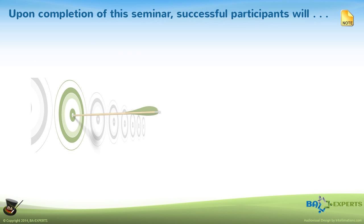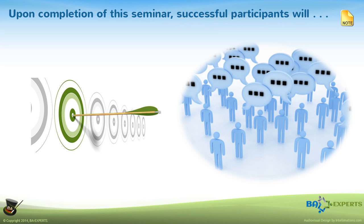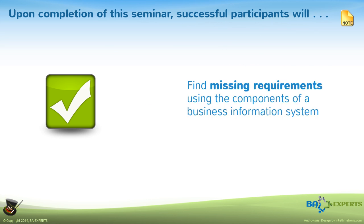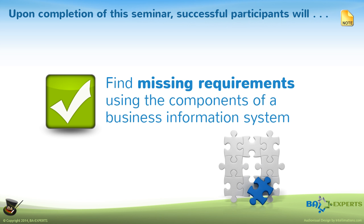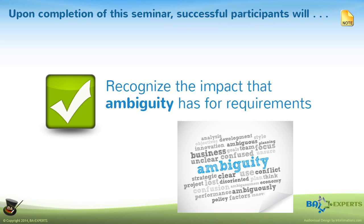The primary learning objective of the workshop is to enable business people to communicate with the information technology department more effectively. Missing or misunderstood requirements are the chronic problem facing IT projects today, and have been since the invention of this versatile and volatile technology. Therefore, we're going to introduce you to the idea of requirements based on the components of a business information system. In the world of requirements, ambiguity is one of your biggest enemies — you heard the words, but did you really get the meaning? Recognizing ambiguity is a key skill for those responsible for defining requirements.